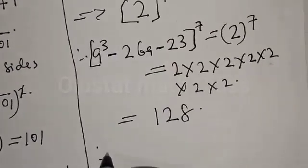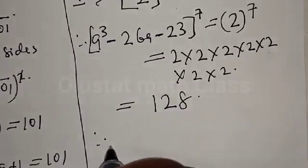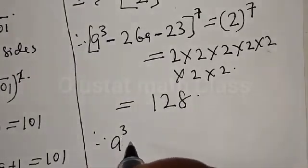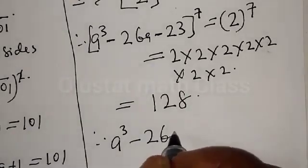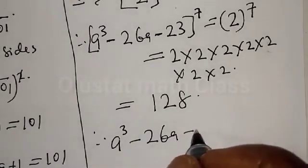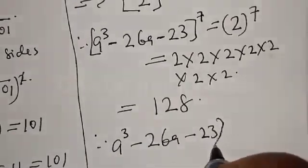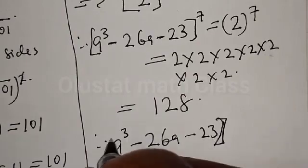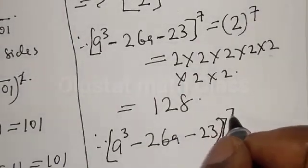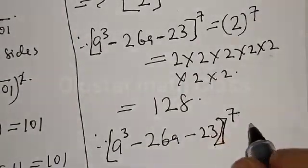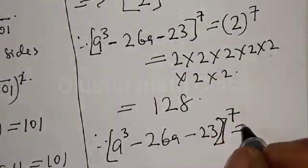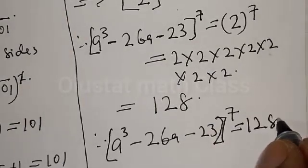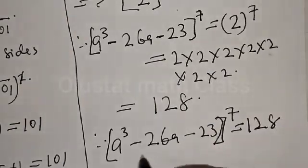Therefore, our final answer is: a raised to power 3 minus 26a minus 23, all raised to power 7, is equal to 128.